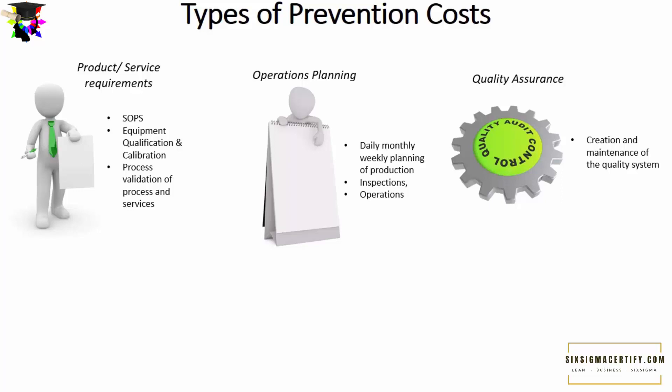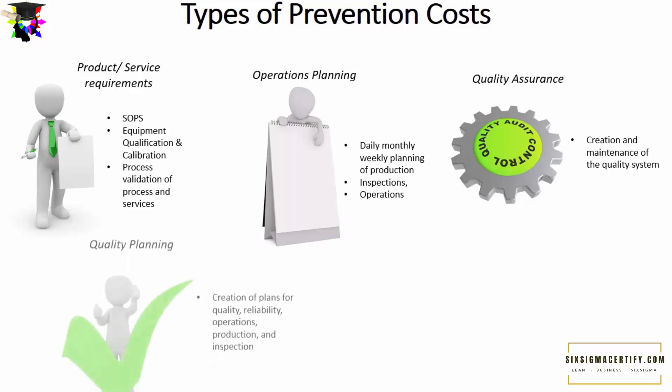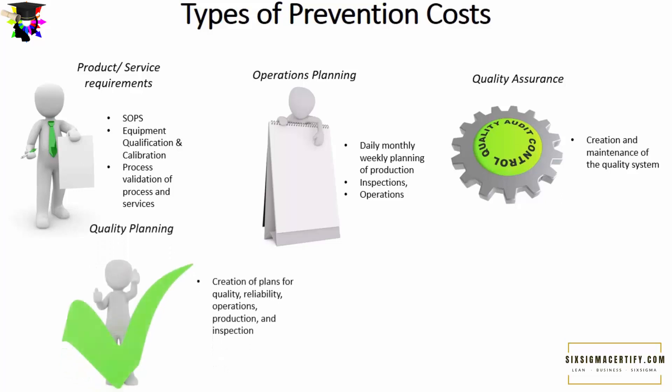The third type of prevention cost is quality assurance related costs, which involve the creation and maintenance of the quality system — all measures by which an organization maintains quality in its products or services. The fourth type is quality planning costs, which involve creating plans for quality and reliability of operations, production, and inspection, focused on maintaining quality and reliability in products.